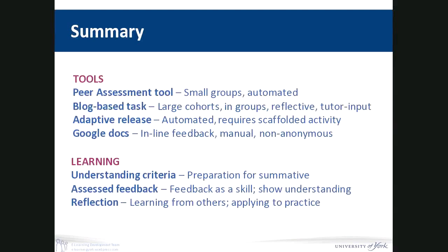In summary, we've looked at four tools: the peer assessment tool, best for small groups with automated functions; blog-based tasks, great for large cohorts and groups with plenty of case studies; adaptive release to release content, requiring a scaffolded activity around it; and Google Docs for inline feedback, a more manual and non-anonymous process requiring significant cohort trust. Different types of learning include understanding criteria, assessed feedback as a skill, showing understanding, reflection, learning from others, and applying to practice.